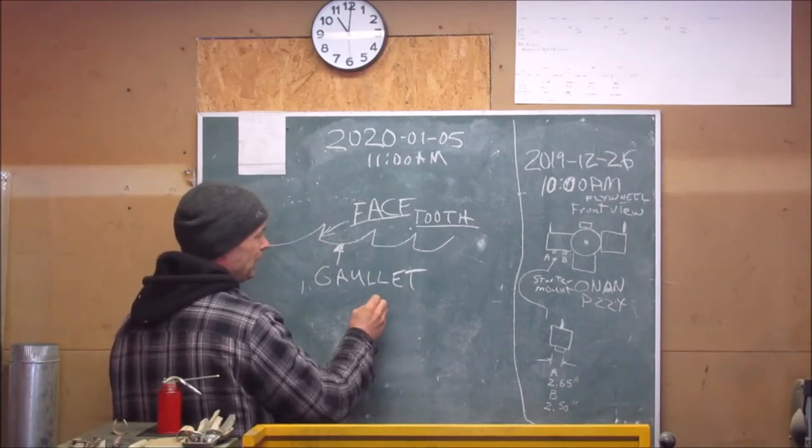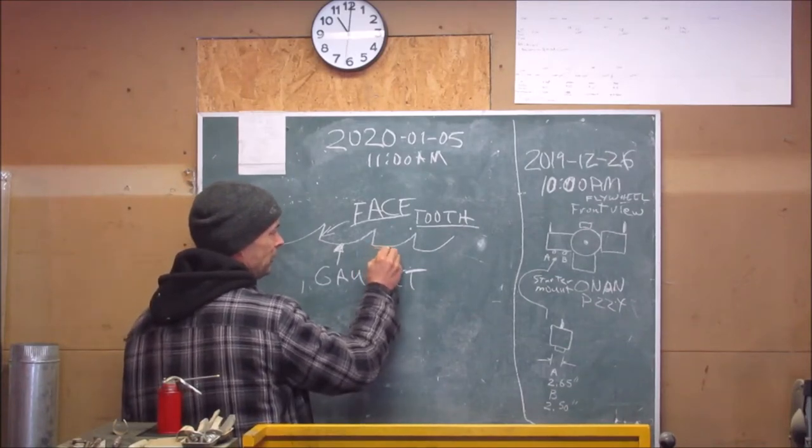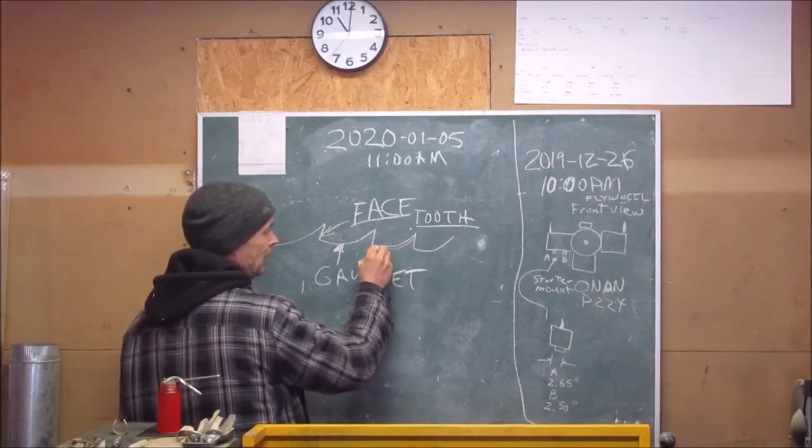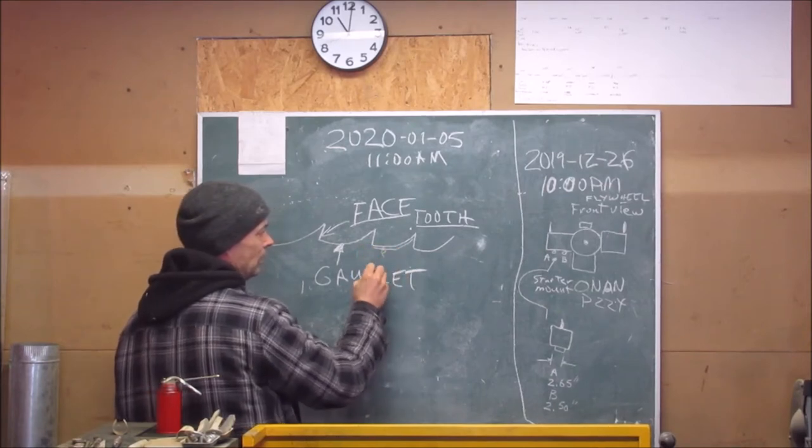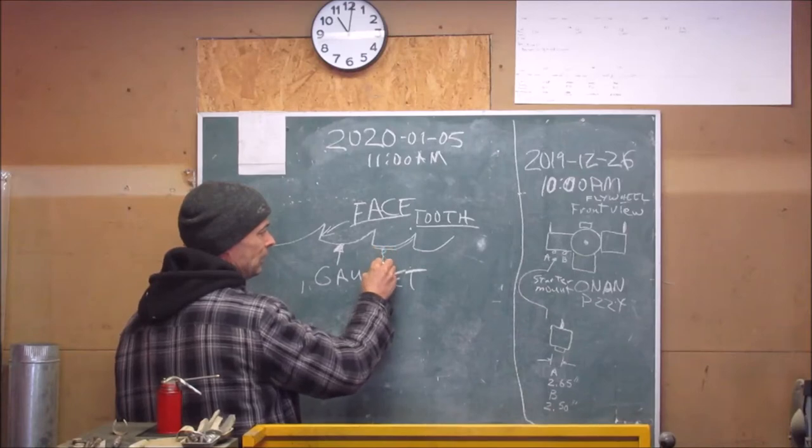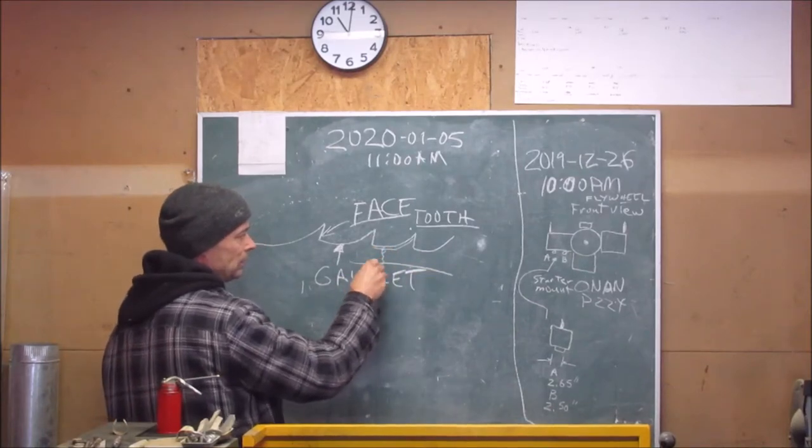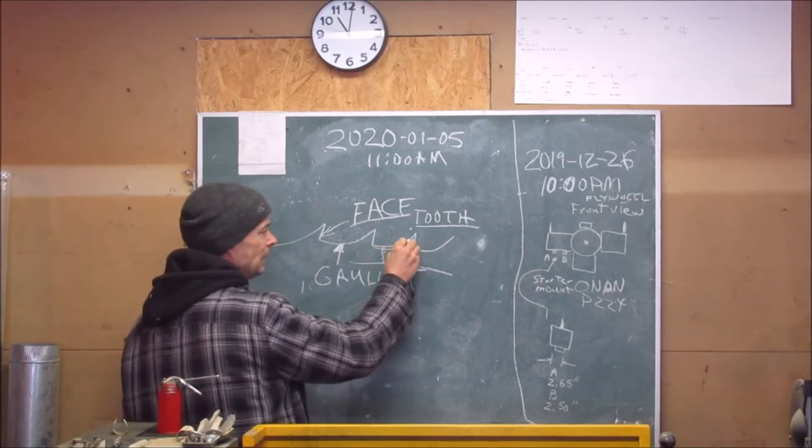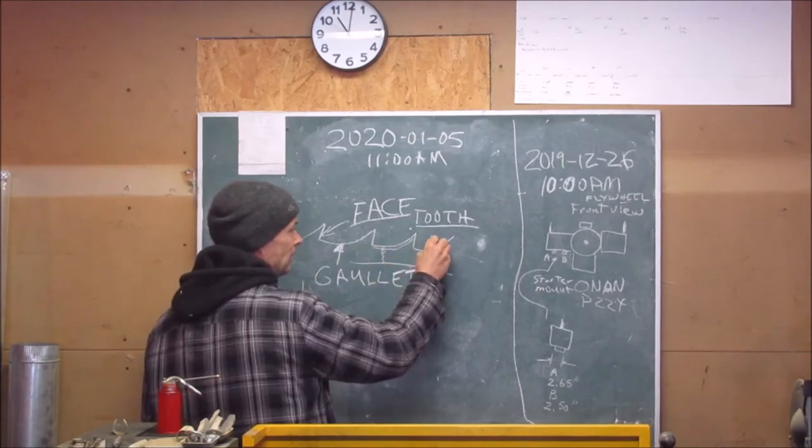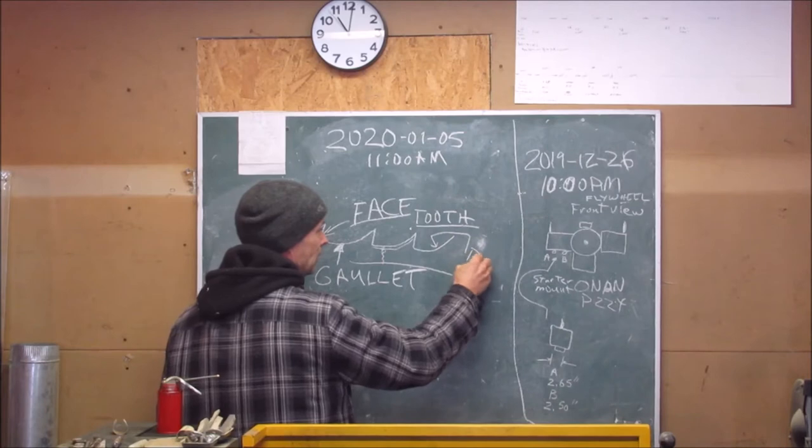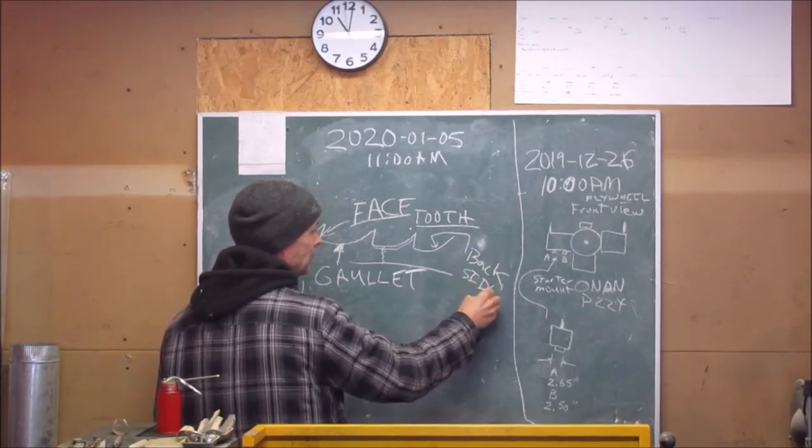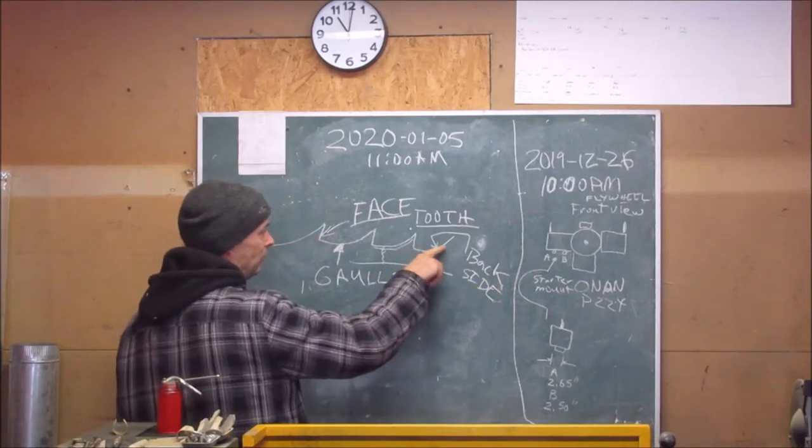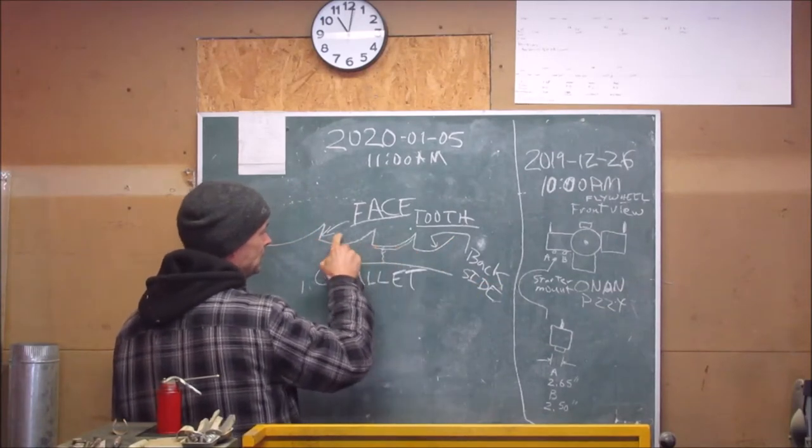When you're sharpening the blade, you want to take some off here. Because here you're going to get cracks. And if you take them out, they can't continue splitting into the blade and have your blade break on you. So you've got to take some off of the backside and you've got to take some off of the face.